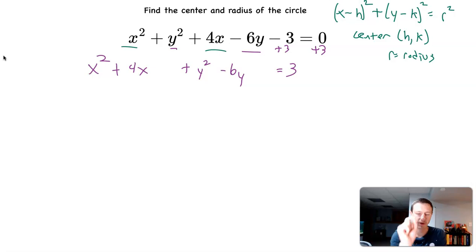So now what you want to notice is we're starting to get into shape. But this form, x squared plus 4x right here, this does not look like this. And this y squared minus 6y, this does not look like this. But what I can do is complete the square in order to get it into this form.